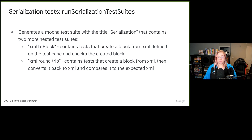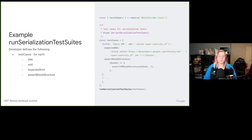The helper provided for running serialization tests is RunSerializationTestSuites. This helper generates a Mocha test suite with the title 'Serialization', which contains two more nested test suites for XML2Block and XMLRoundTrip tests. The XML block test suite runs tests that create a block from XML and checks that the created block has the expected structure. The XML round trip test suite creates a block from XML, converts it back to XML, and compares it to the expected XML output. This helper is passed test cases of the type SerializationTestCase, which defines the expected XML and assertion functions to use for checking the block structure. You can check out our JS doc for the SerializationTestCase type to learn further about configuration.